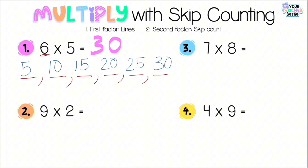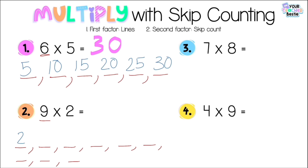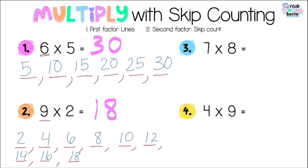For number two, we have nine times two. The first factor tells us how many times we're going to be skip counting — in this case, nine times — so I draw nine lines. The second factor tells us we're skip counting by two: two, four, six, eight, ten, twelve, fourteen, sixteen, and eighteen. Stop. Eighteen is the answer, or the product, to nine times two.